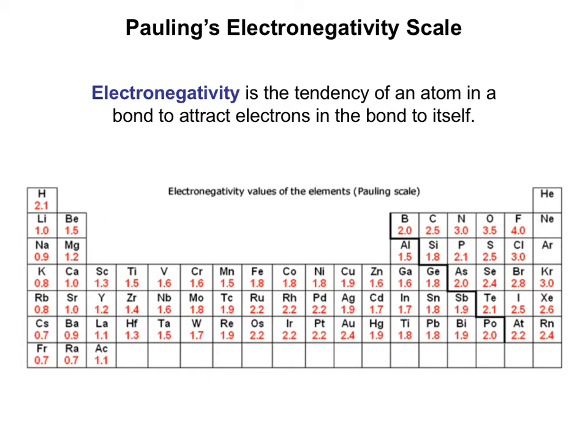Next we talk about Pauling's electronegativity scale. This is Linus Pauling, a famous Nobel laureate chemistry professor from Caltech. He developed this scale for elements in the periodic table in terms of their electronegativity. Electronegativity is the tendency of an atom in a bond to attract electrons in the bond towards itself.